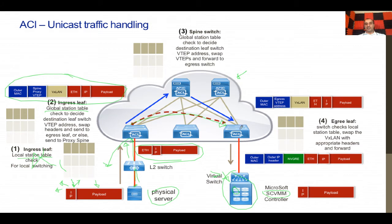The egress leaf switch receives the VXLAN packet. It knows the source EPG because that was appended to the VXLAN headers, and it knows the source MAC and source IP carried within the VXLAN. It then looks up its own local station table to find the destination IP, the corresponding MAC, and what encapsulation to use — whether to send it with VLAN headers (802.1Q), VXLAN, or NVGRE.